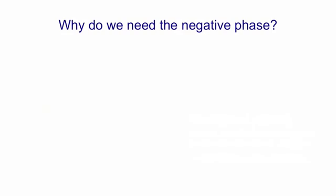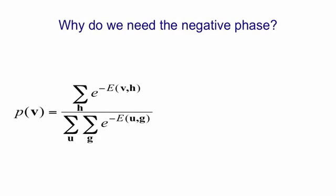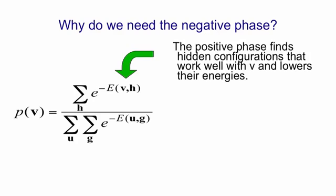Another question you could ask is, what's that negative phase for? I've already said it's like the unlearning we do in a Hopfield net to get rid of spurious minima, but let's look at it in more detail. The equation for the probability of a visible vector is that it's the sum over all hidden vectors of e to the minus the energy of that visible and hidden vector together, normalized by the same quantity summed over all visible vectors. So if you look at the top term, what the first term in the learning rule is doing is decreasing the energy of terms in that sum that are already large.